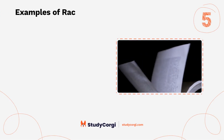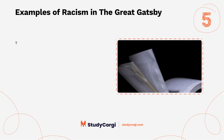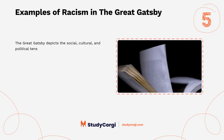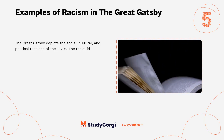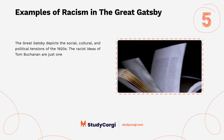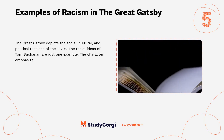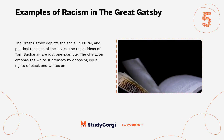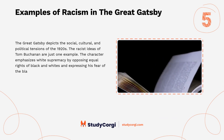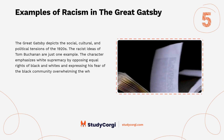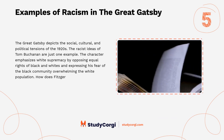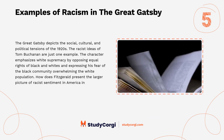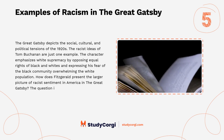Examples of Racism in The Great Gatsby. The Great Gatsby depicts the social, cultural, and political tensions of the 1920s. The racist ideas of Tom Buchanan are just one example. The character emphasizes white supremacy by opposing equal rights of black and whites and expressing his fear of the black community overwhelming the white population. How does Fitzgerald present the larger picture of racist sentiment in America in The Great Gatsby? The question is worth researching.